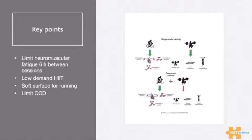The key recommendation from Jackson is to limit neuromuscular fatigue by having at least six hours between sessions — sometimes 24 hours if you can. You can look at that from either end of the spectrum, both strength and endurance conditioning. If your metabolic conditioning session has an element of neuromuscular fatigue in it, make sure there's at least a six-hour window before the strength session. If it's excessive, you probably want to have it on the next day.